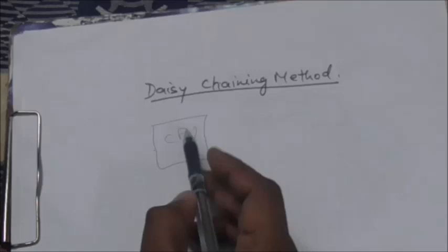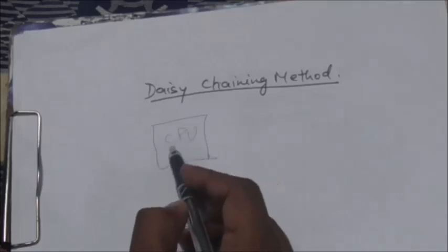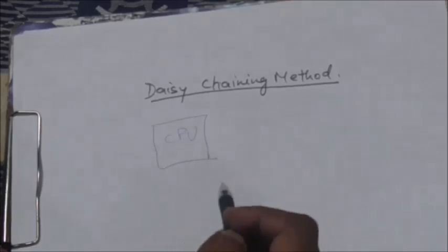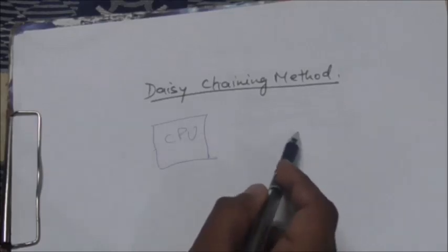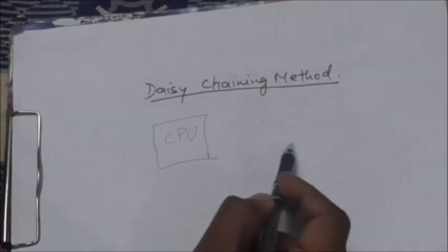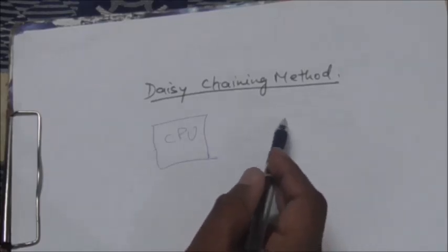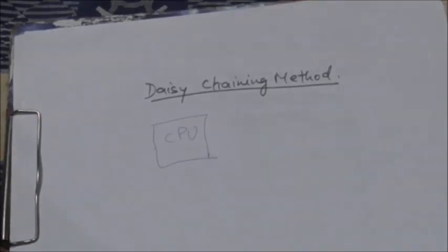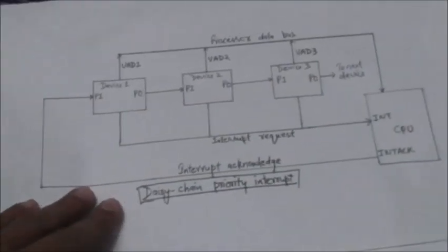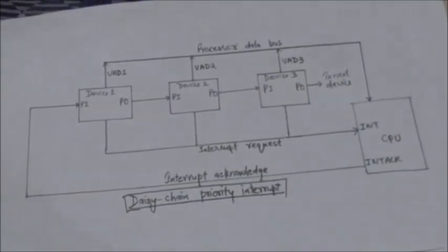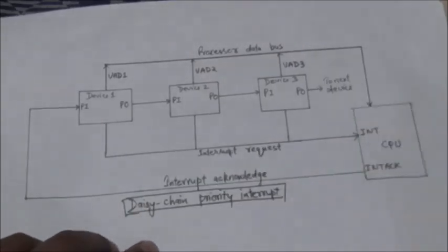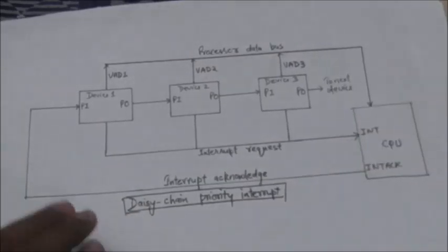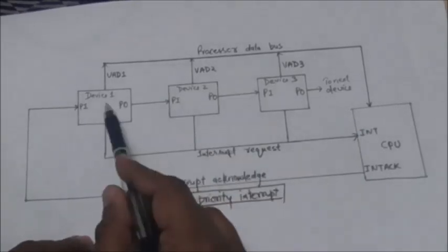In that case, priority has to be established among the input/output devices so that the device which has the highest priority gets its interrupt request serviced first. Daisy chaining is a method for establishing priority among input/output devices on the basis of their position.